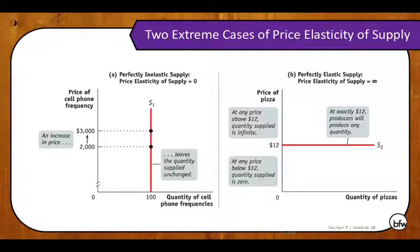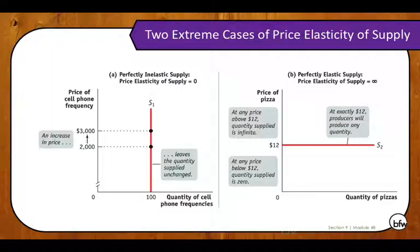On the other end, a perfectly elastic supply curve is perfectly horizontal — the same as a perfectly elastic demand curve. Instead of being equal to zero, we say it is equal to infinity. At any price above $12, the quantity supplied would be infinite; at exactly $12, producers will produce any quantity demanded. At any price below $12, quantity supplied will be zero. This is the opposite of demand, where at a price above $12 demand falls to zero, and below $12 quantity demanded would be infinite. A perfectly horizontal supply curve means perfectly elastic supply, equal to infinity.